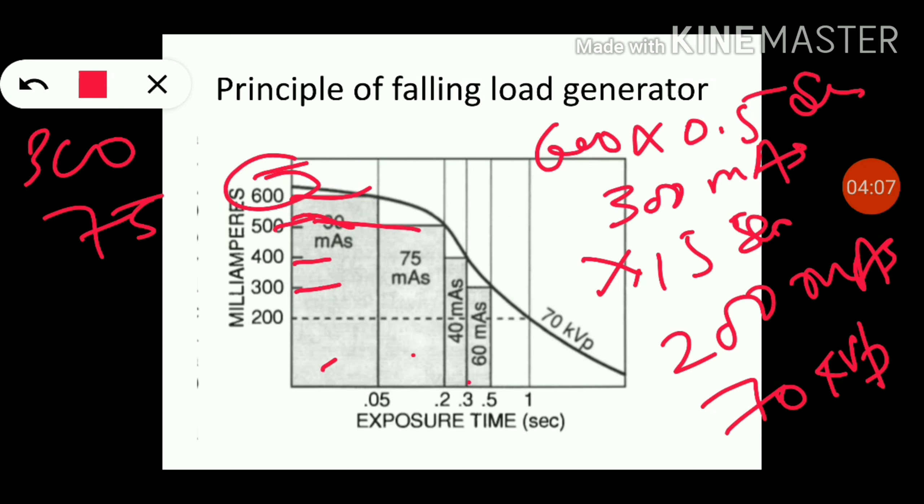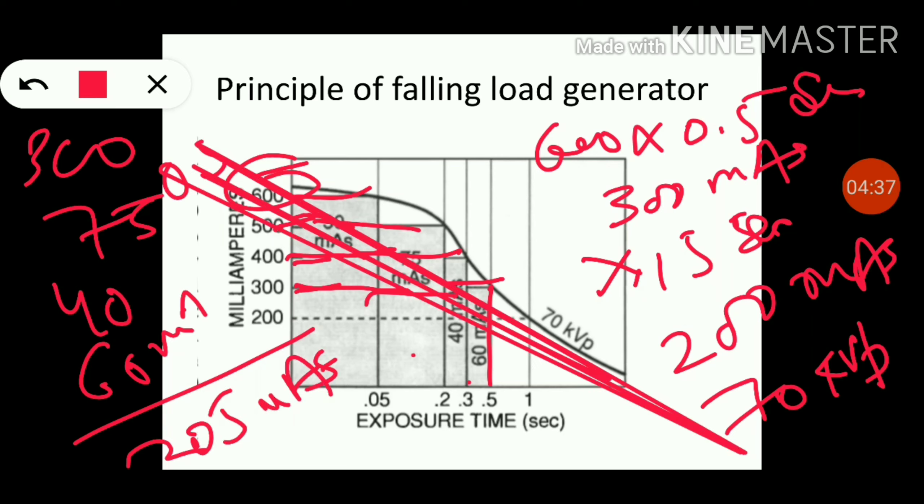First, we get 30. Then at 400 mA for 0.10 seconds, we get 40 mAs. And at 300 mA for 0.20 seconds, we get 60 mAs - that is a total of 205 mAs in 0.5 seconds.